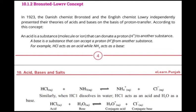This concept was proposed in 1923 by the Danish chemist Bronsted and the English chemist Lowry. They described the definitions of acids and bases independently. According to this concept, an acid is a substance, molecule, or ion that can donate a proton to another substance — acid is a substance that can give a proton to another molecule.